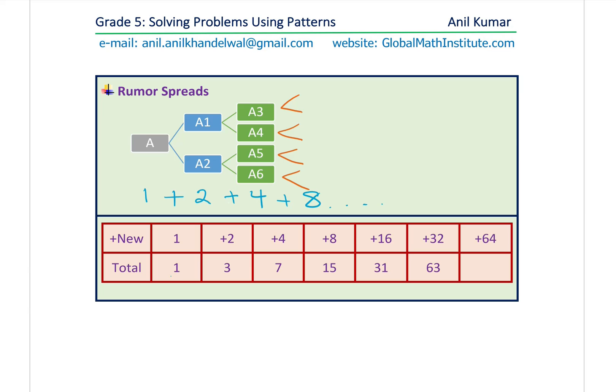What we can do to solve this type of problem is make a table. The table shows new persons adding on to the awareness list and what becomes the total number. To begin with, only Anil Kumar knew about it. Then at two, Anil informed two more, so two people got added and we get a total of three persons knowing the rumor. These two persons then added four. As far as the new members joining, it is multiples of two — every half an hour we see additional times-two people joining the group.